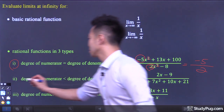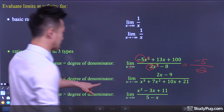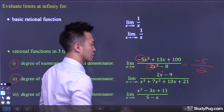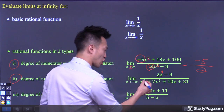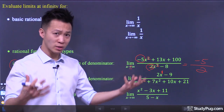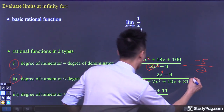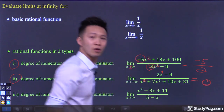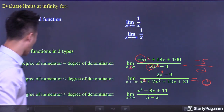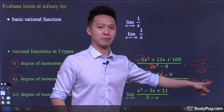The second type of rational function is when the degree of the numerator is less than the degree of the denominator. Here the degree of the numerator is 1, which is less than the degree of the denominator, 3. By using the highest power rule, we're going to show that this type of limit is always going to be equal to 0. Whether x is approaching positive infinity or negative infinity, a Type 2 rational function always has a limit of 0.